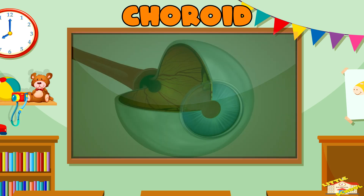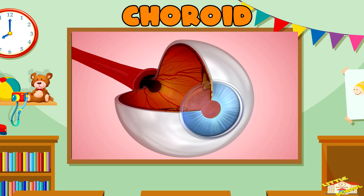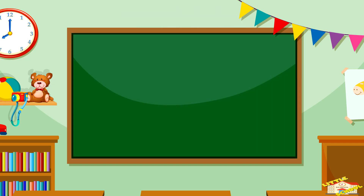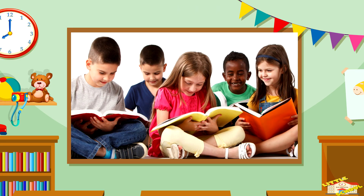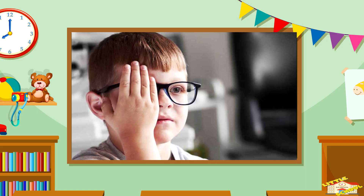Choroid: The choroid is the layer of blood vessels between the retina and the sclera. It supplies nutrients and oxygen to the outer parts of the retina. Each part plays a key role in how we see, and problems with any of them can cause vision issues.